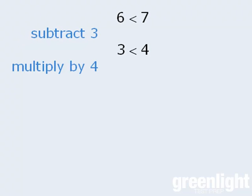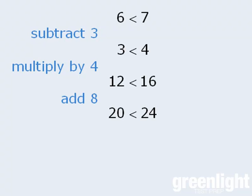Similarly, if we multiply both sides by 4, the inequality remains since 12 is less than 16. Adding 8 to both sides results in 20 is less than 24, which is a valid inequality. Dividing both sides by 2 results in a valid inequality as well. So it would appear that inequalities behave the same as equations do: if you perform the same operation to both sides, the inequality remains intact.